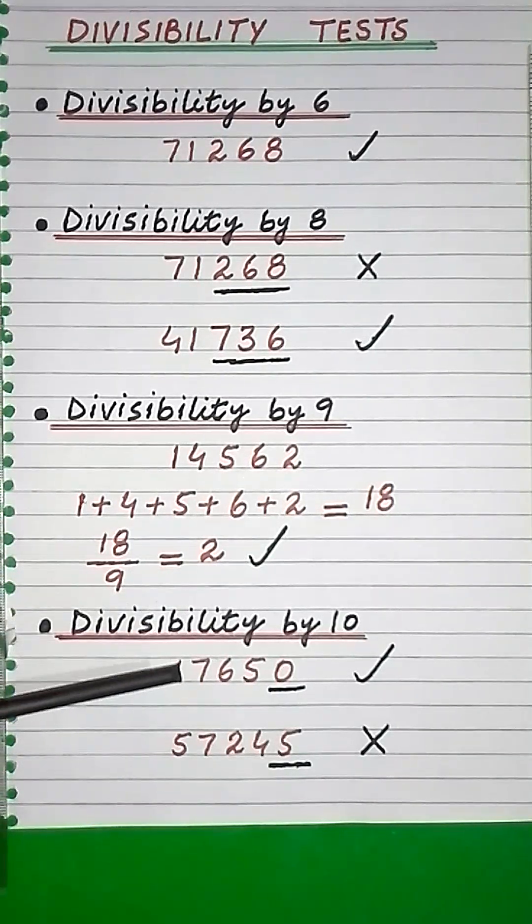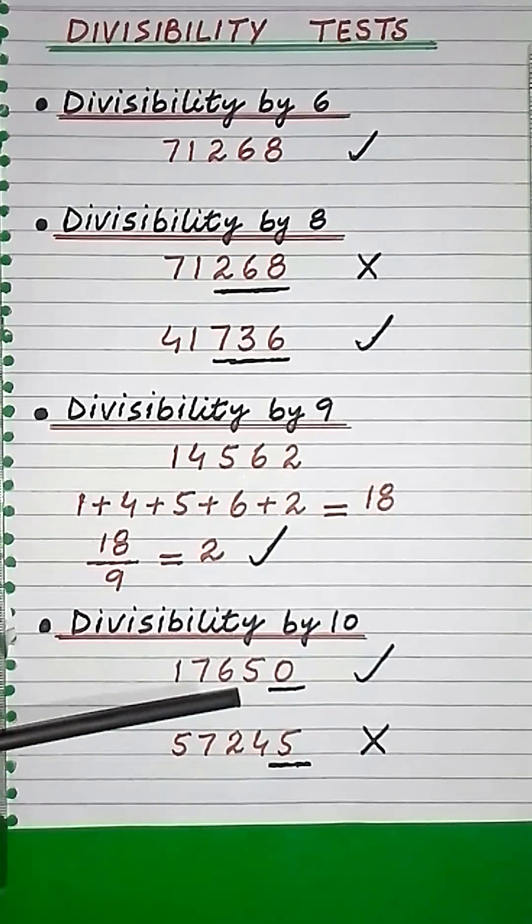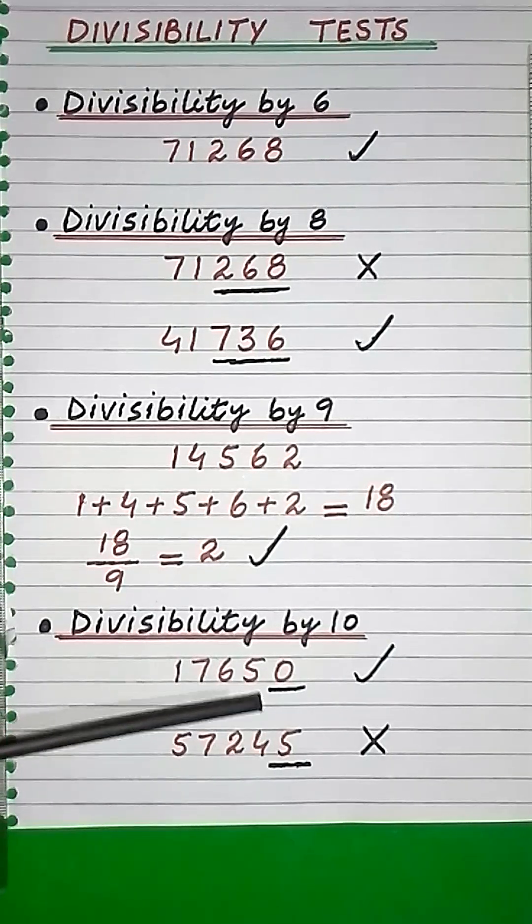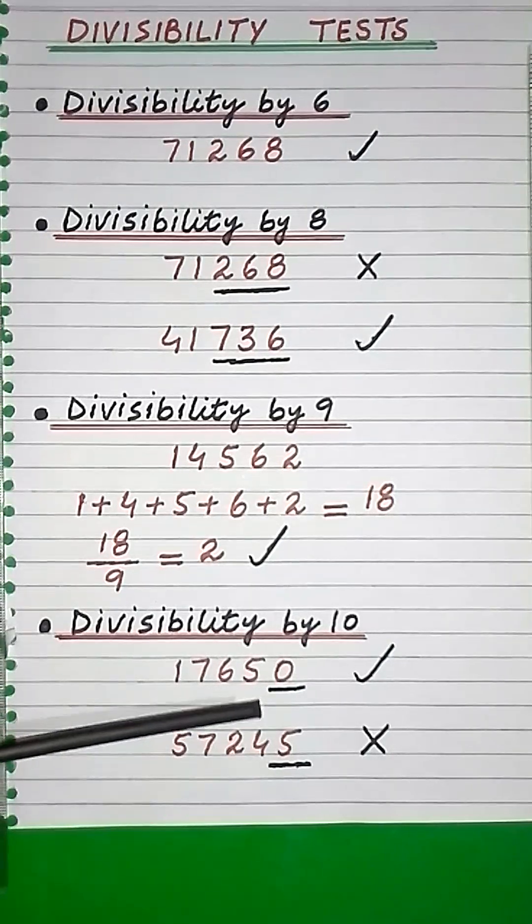A number is divisible by 10 only if its last digit is 0.